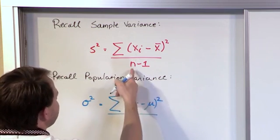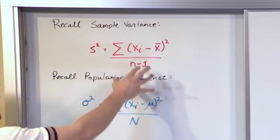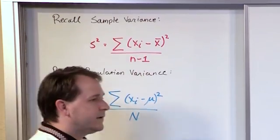And instead of n minus 1, it was n, the total number of people or items in the population. This is what we've learned before. These do measure the spread of the data. They do.